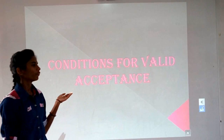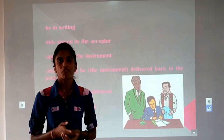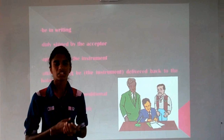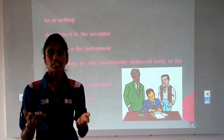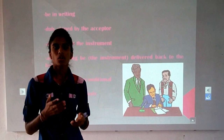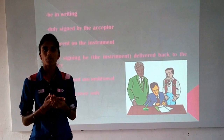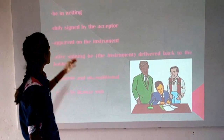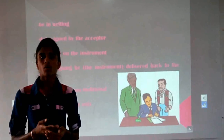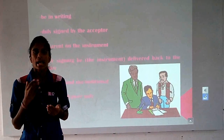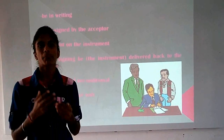Let's read the requirements. First, it must be in writing — the drawee of the bill should give his assent by putting his signature on the bill. Second is it must be signed by the acceptor, which means the signature of the acceptor is necessary not only to constitute a valid acceptance but also to make the acceptor or drawee liable on the bill. Third is it must be apparent on the instrument.